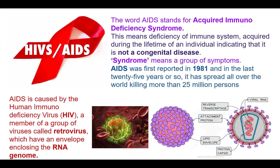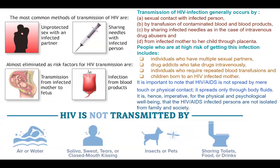Inside the HIV virus there is viral RNA and a reverse transcriptase enzyme along with attachment proteins, a lipid envelope, and a protein capsule. This is the structure of HIV. From RNA, the reverse transcriptase produces viral DNA, which is the reverse of the normal DNA-to-RNA direction.